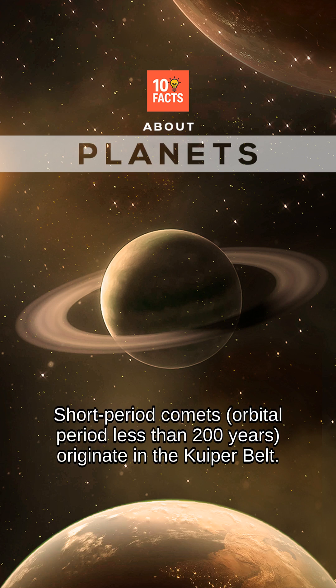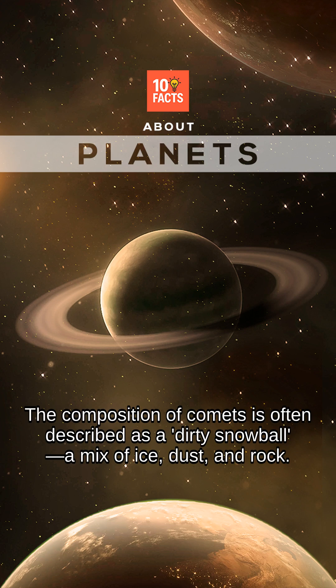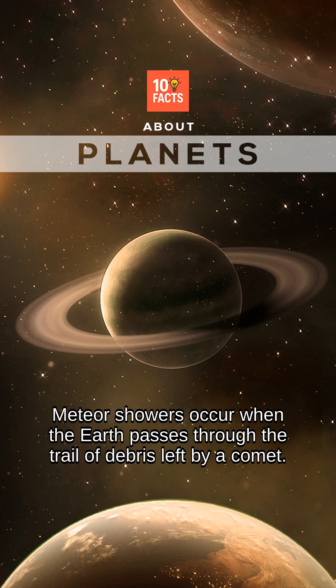Short period comets, with an orbital period of less than 200 years, originate in the Kuiper belt. The composition of comets is often described as a dirty snowball — a mix of ice, dust, and rock.